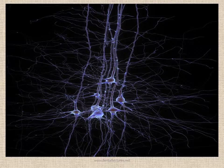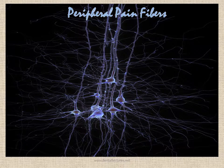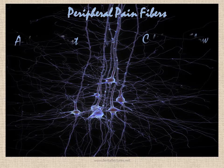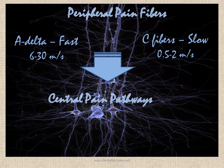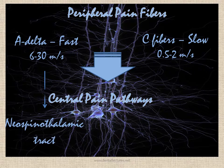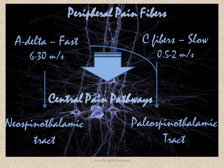These causes of pain lead to commencement of excitation of peripheral sensory pain fibers that start sending nerve impulses. There are two types of these peripheral pain fibers: the fast A-delta fibers that carry impulses at a velocity of 6 to 30 meters per second, and the slower C fibers that carry impulses at a lesser velocity of 0.5 to 2 meters per second. These fibers carry impulses towards the brain through central pain pathways — the fast or neospinothalamic tract, which entirely consists of A-delta fibers, and the paleospinothalamic tract, which consists mainly of C fibers.